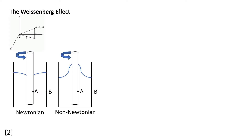The phenomenon displayed earlier actually has a name and it's called the Weissenberg effect. It can be seen both visually and by applying pressure taps within the fluid, as shown in the diagrams here. For a Newtonian fluid, you'll find that the pressure at B is greater than the pressure at A. And for a non-Newtonian fluid that exhibits the Weissenberg effect, you're going to get a pressure at A being greater than that at B. So why exactly is this the case?